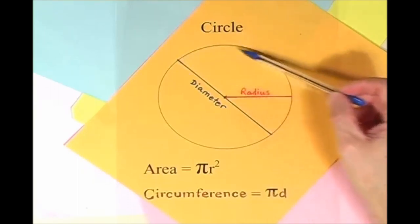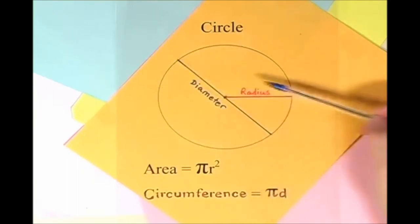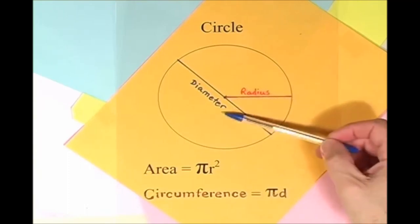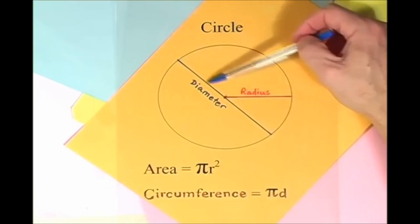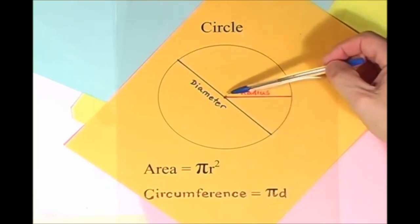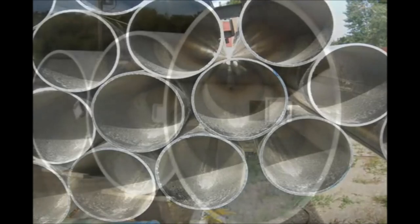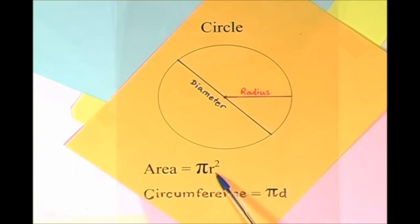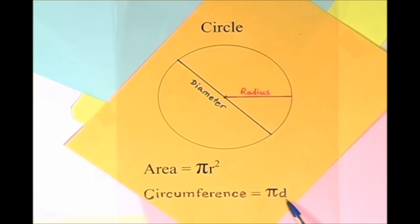Here is a circle, it knows how to get around. It has a radius from center to rim. And its diameter's a line that goes from side to side while passing through the center, now isn't that simple. Pi r squared sounds like area to me, when I need a circumference, I'll just use pi d.